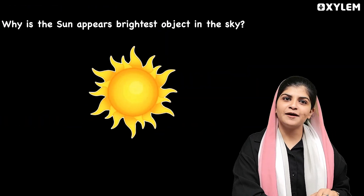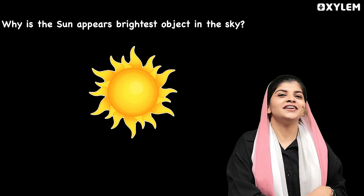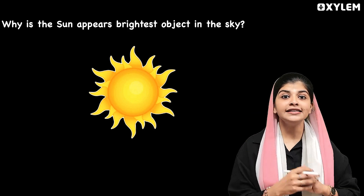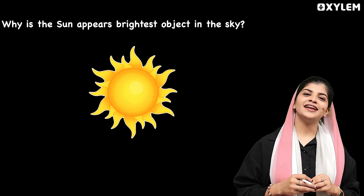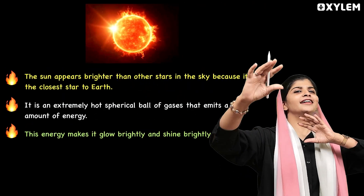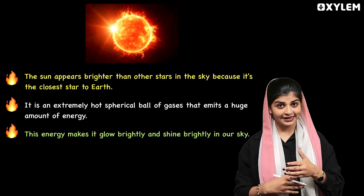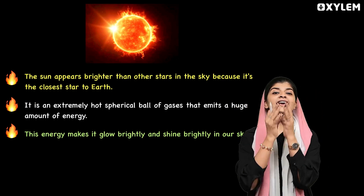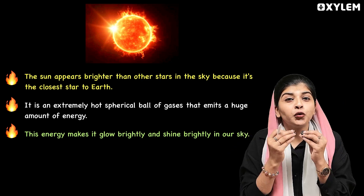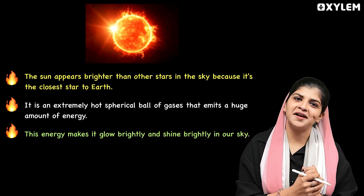Why does the sun appear to you as the brightest object in the sky? Sun is a star. The main reason is that it's an extremely hot spherical ball of gases that emits a huge amount of energy. That's why it's so bright.